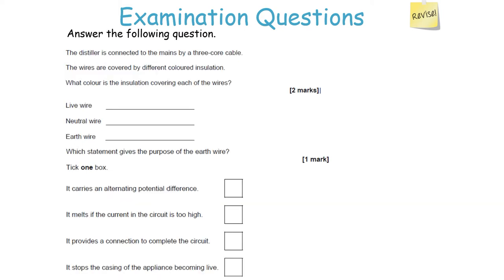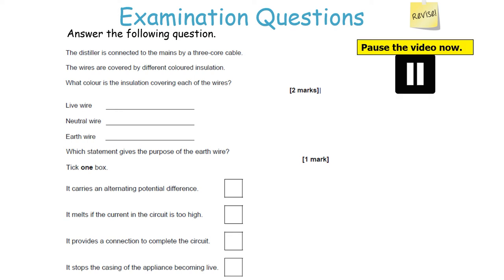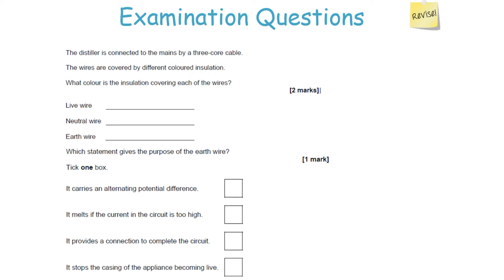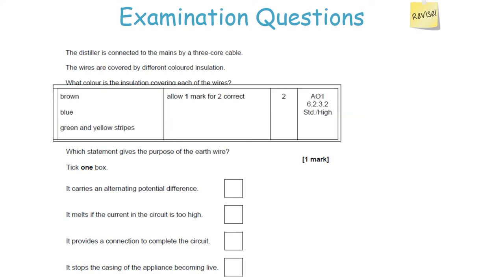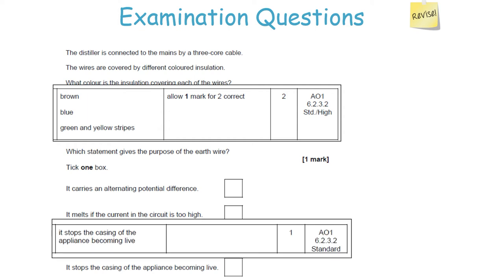A distiller is connected to the mains by a three-core cable with different colored insulation. The live wire is brown, the neutral wire is blue, and the earth wire is green and yellow stripes — these are facts to memorize. The live wire carries an alternating potential difference. The neutral wire provides a connection to complete the circuit. The earth wire stops the casing of the appliance from becoming live.